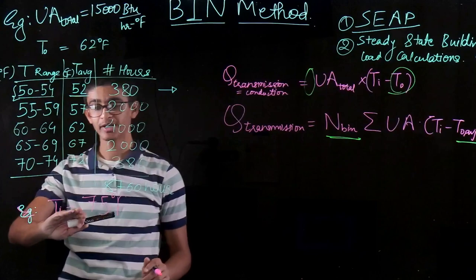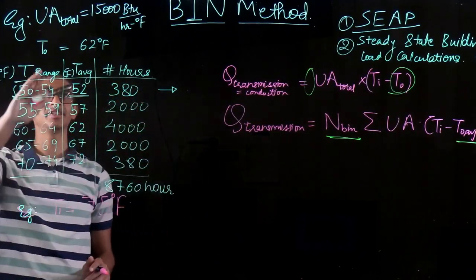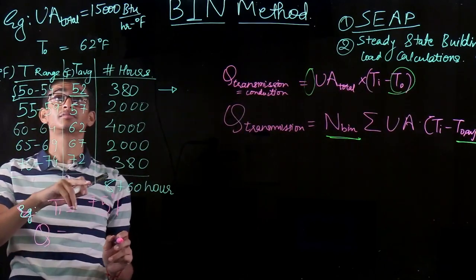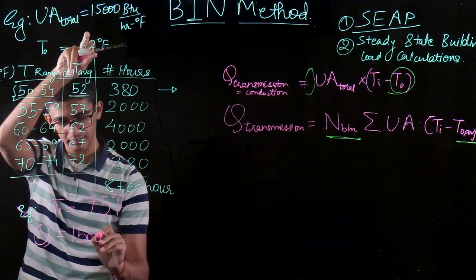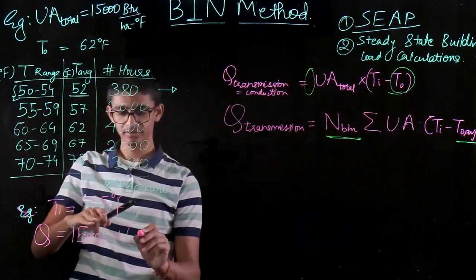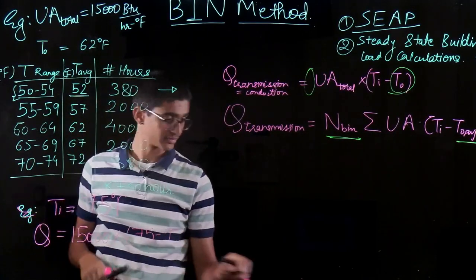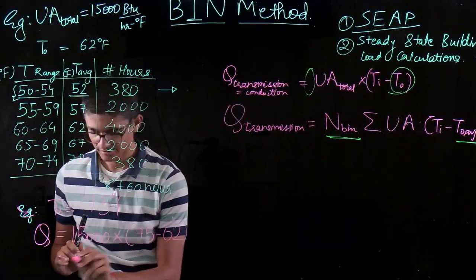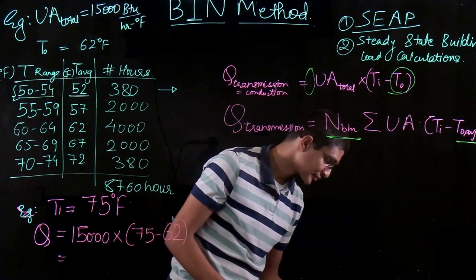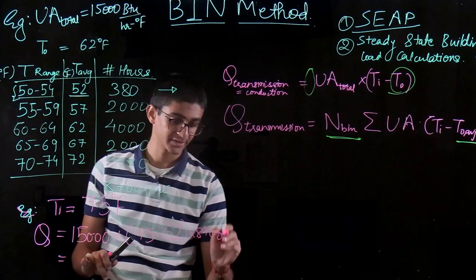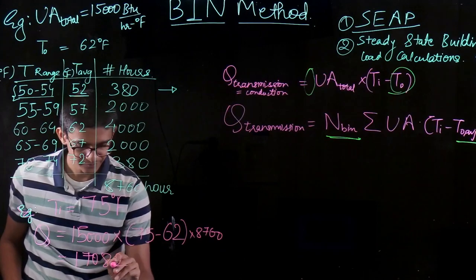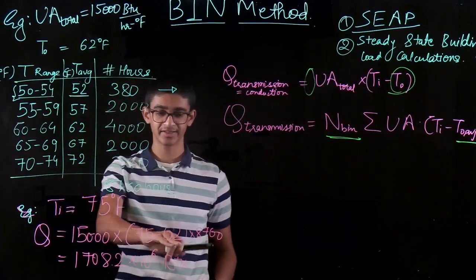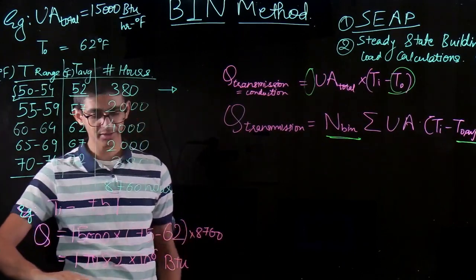If I do the basic steady-state calculation using the average values: Q = UA_total × (T_in − T_out) = 15,000 × (75 − 62) × 8,760 hours = 1,708.2 × 10⁶ BTU. Since internal temperature is higher than external, this represents the total heating energy required for the year. That is the simple average-based result.